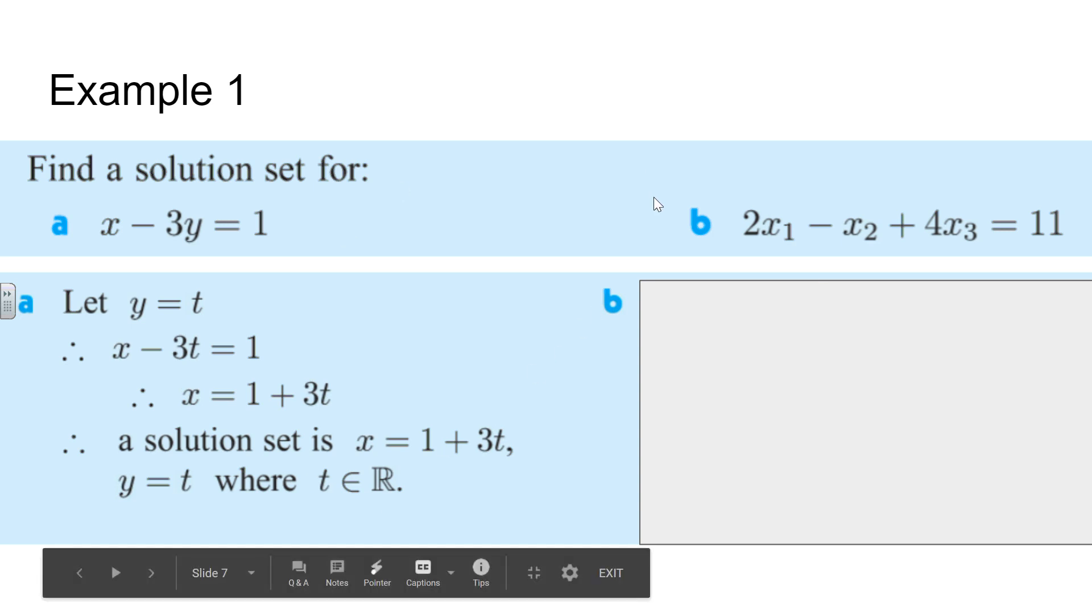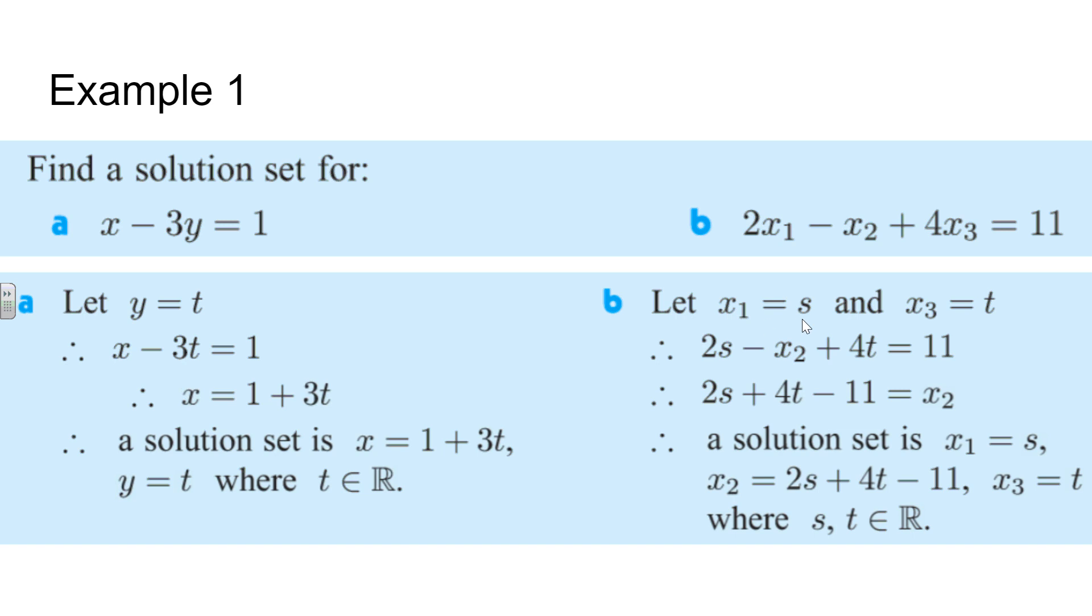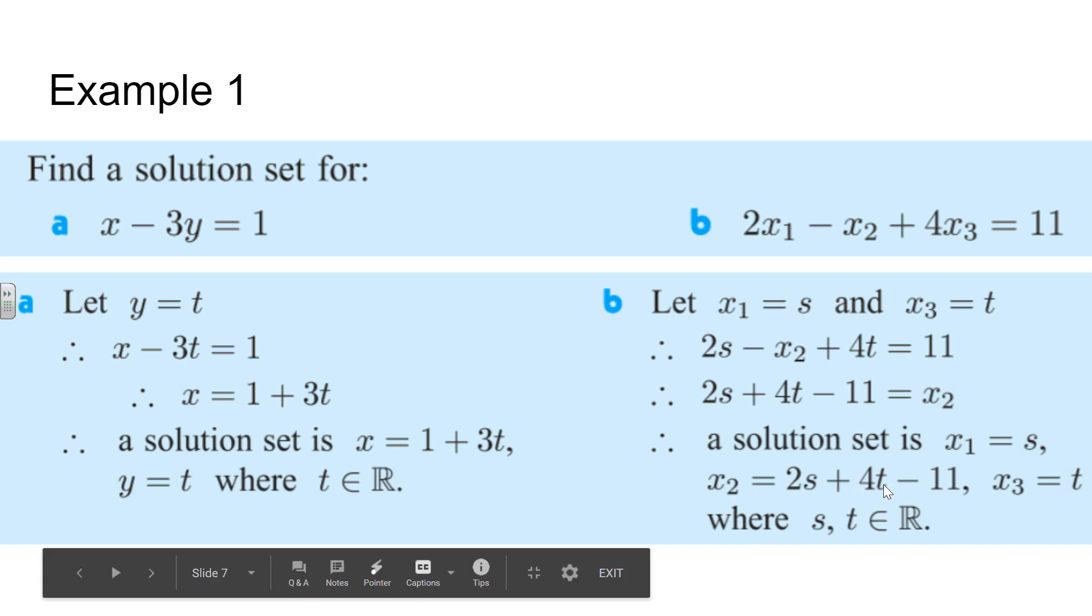Now when I go from a to b, I notice that instead of just having two variables, I have three variables. What that implies is that I'm going to need to let two of those variables be parameters. And again, which ones I pick is kind of up to me, but there are some that are going to be better than others. In this particular situation, we decided to let x1 equal s and x3 equals t. And therefore we're going to solve for x2 in terms of s and t. We have 2s minus x2 plus 4t equals 11. And then we solve for x2 by adding it over and then subtracting the 11 over. So when we go to write our solution set, we say x1 equals s, x2 equals 2s plus 4t minus 11, and x3 equals t. And again, s and t are real numbers.